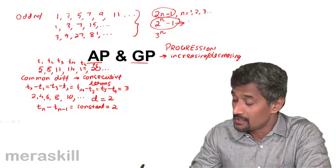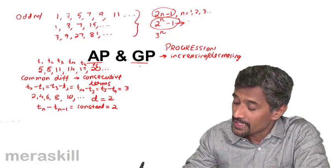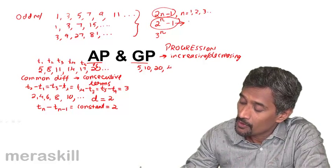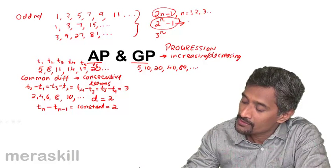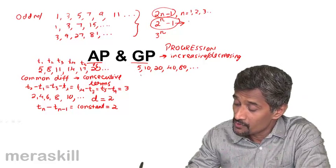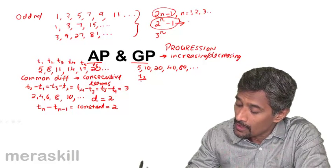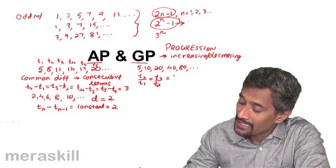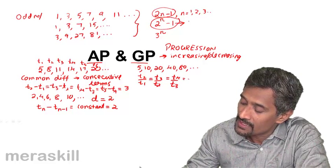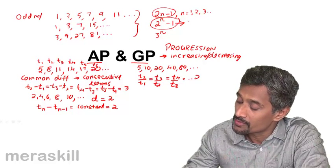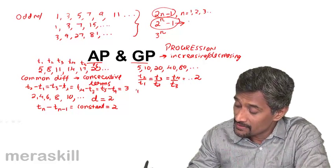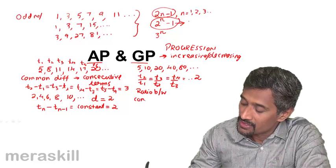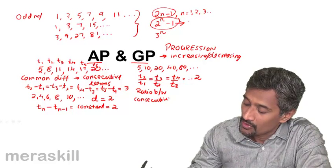On the contrary, you look at geometric progression. Say you have 5, 10, 20, 40, 80, and so on and so forth. So here, if you see t2 upon t1, as well as t3 upon t2, as well as t4 upon t3, the ratio of consecutive terms is constant.